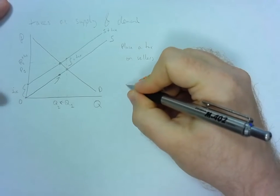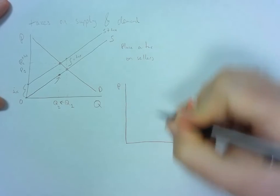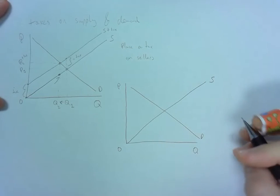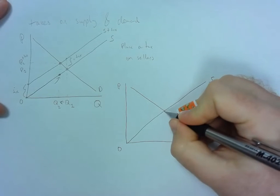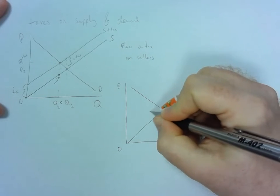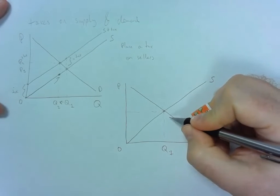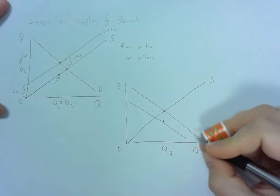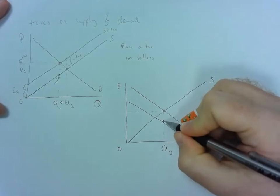Now what happens if you put a tax on consumers? Well, so what you need to figure out is, everything else equal, if you put a tax on consumers, how much are they willing to pay for that given product? And if we keep quantity equal, and they have to pay more because of a tax, they're going to be willing to pay less, everything else equal, because they know that a tax is going to be added onto it.